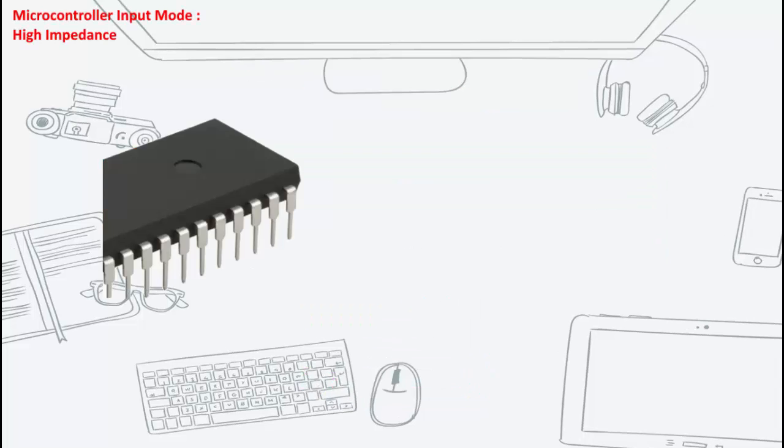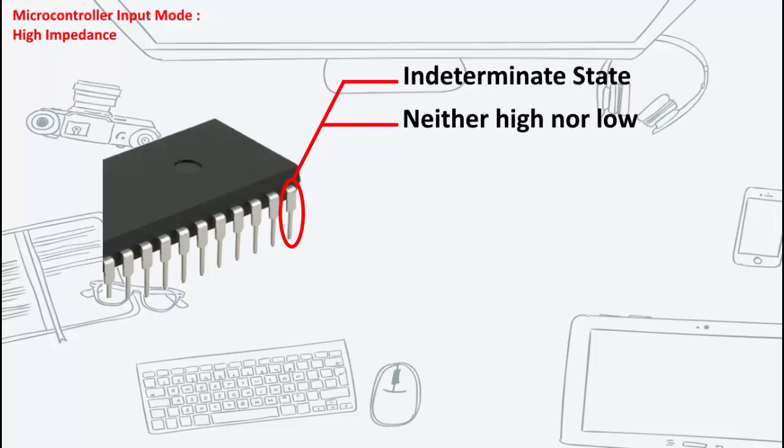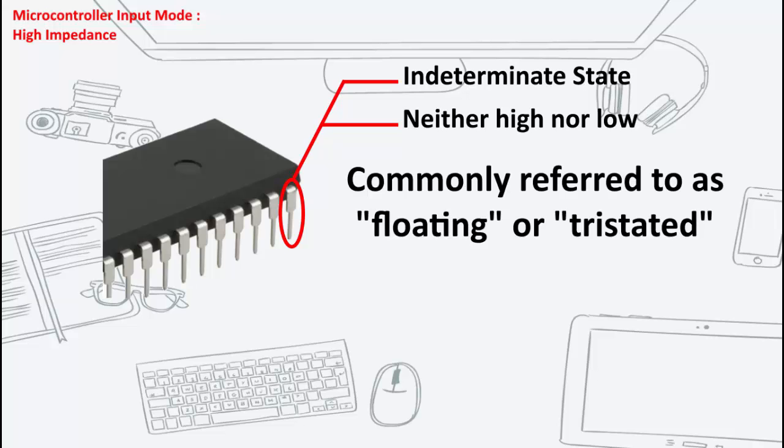A high impedance pin has an indeterminate state. It is neither high nor low, which is also commonly referred to as floating or tristated.